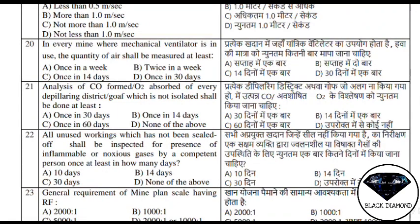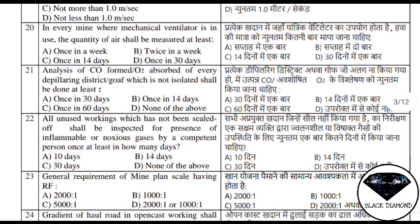Question number 20 is about where the mechanical ventilator quantity measurement is done — whether in a week, two times, 14 days, or 30 days. The correct answer is once in 14 days. This is given under Regulation number 156, point number 8.